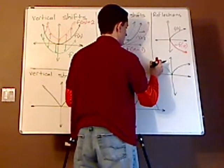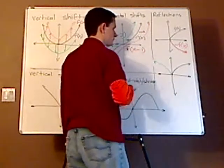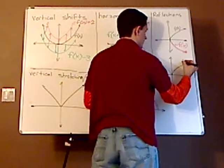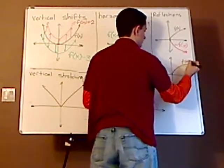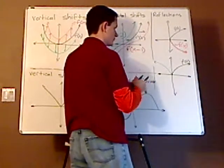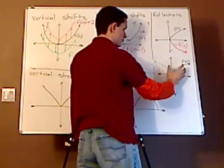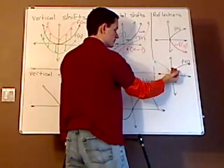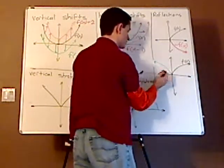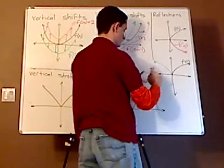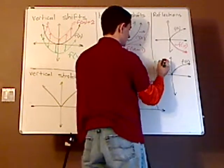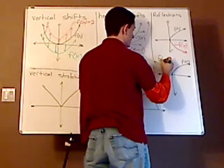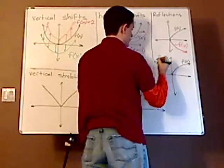Now, if I want to reflect on the y-axis, this is f of x, then this has to be... the y's are staying the same, but the x's are changing from positive to negative, just the opposite. That would make this f of negative x.